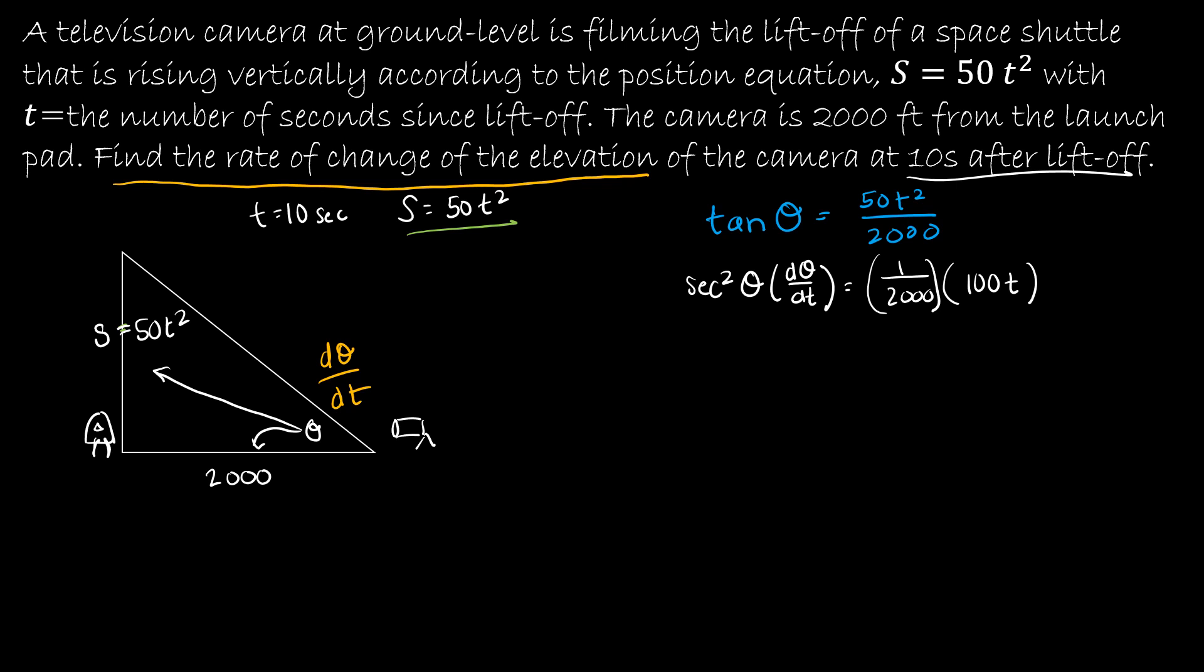I don't love the fact I've got a t in my function, so let's plug in 10 because we're dealing with this at 10 seconds. This is 100 times 10, which is 1000. When I rewrite, I have sec²(θ)·dθ/dt = 1000/2000 = 1/2. Let's get dθ/dt by itself.